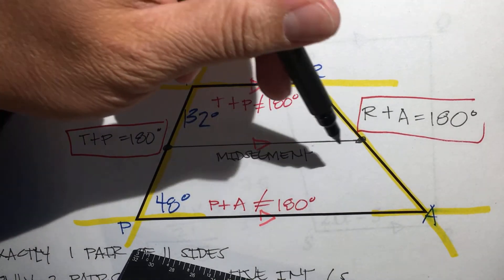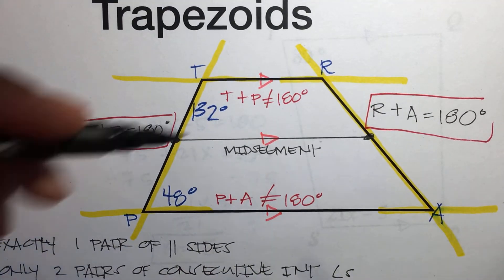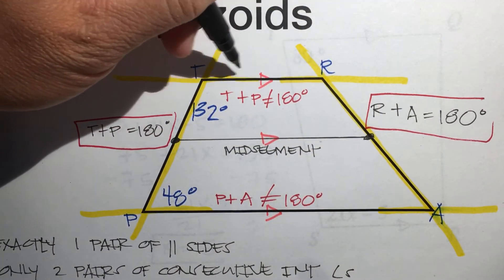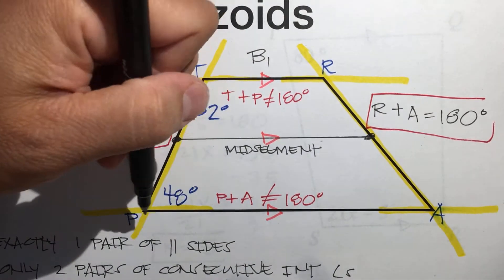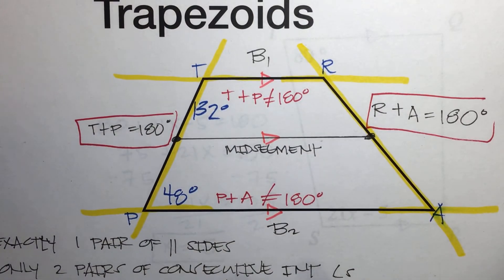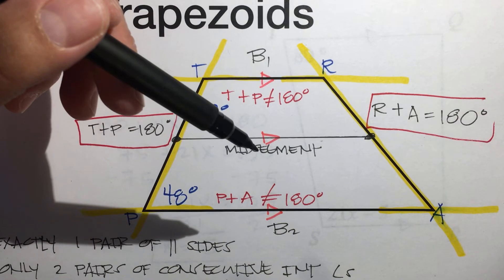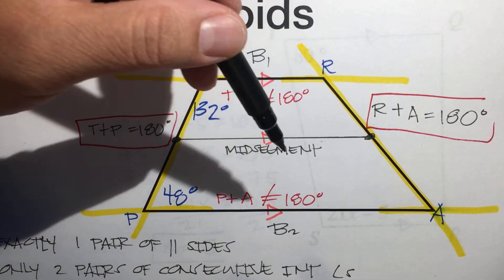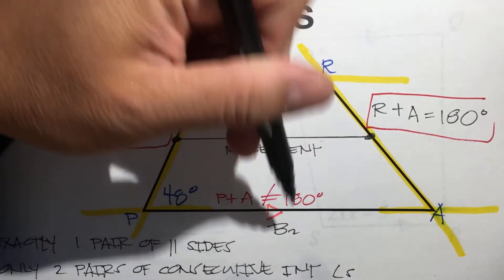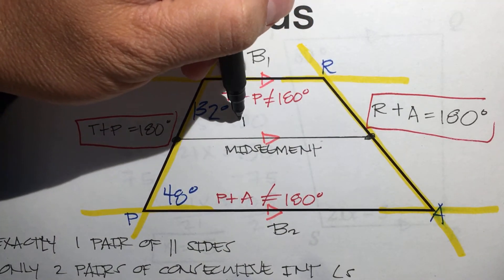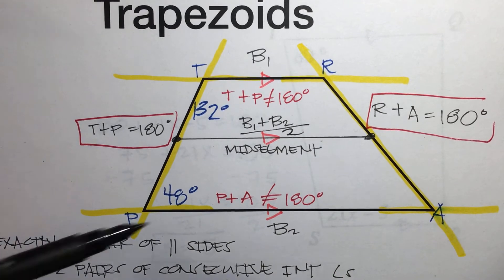We're going to focus on the length of this midsegment. To find the length, we need to know the measures of these two lines. This side is called base one and this side is called base two. This may sound familiar — if you remember the formula for the area of a trapezoid: B1 plus B2 times H divided by two. The midsegment formula is the average of these two: B1 plus B2 divided by two. For example, if B1 is 7 and B2 is 12, the midsegment is 7 plus 12 divided by 2, which is 19 divided by 2, which is 9.5.